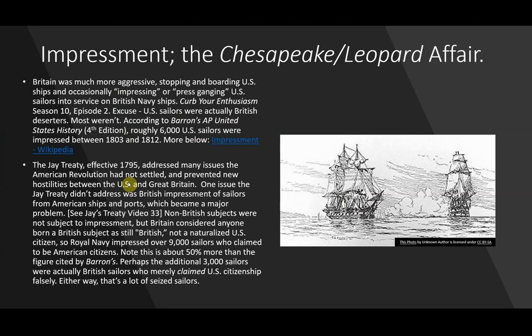The excuse used by the British Navy was that these U.S. sailors were actually British deserters — most of them weren't. According to Barron's AP United States History 4th edition, roughly 6,000 U.S. sailors were impressed between 1803 and 1812. You can go to the impressment article on Wikipedia to read the sources used.